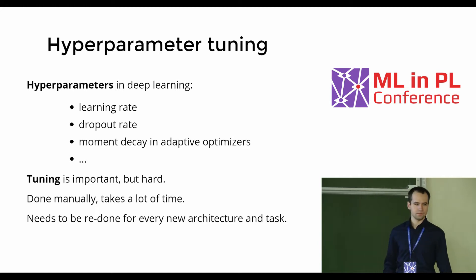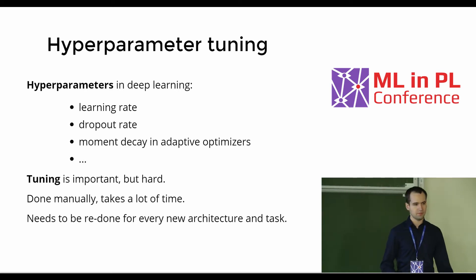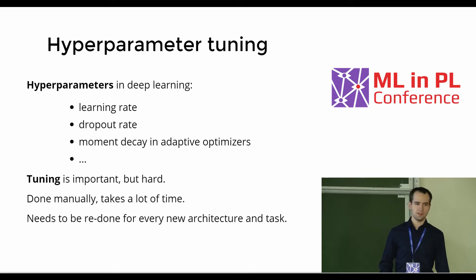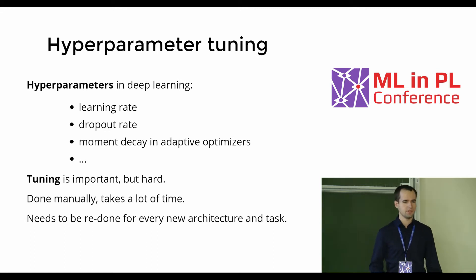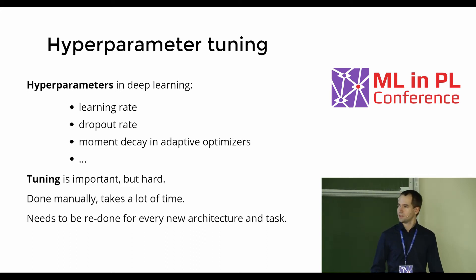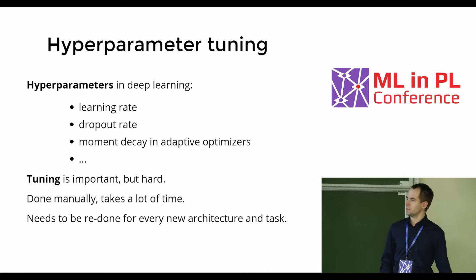But it is also a hard problem. There are no a priori known rules for how to choose those hyperparameters, and what we usually end up doing is just choosing them by trial and error. This takes really a lot of time. If you are trying to beat the state of the art on some task, usually many people are running very many experiments in order to get those hyperparameters just right. So there is a big need for automatic methods.